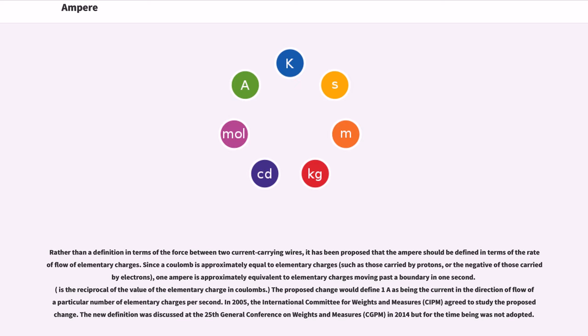Rather than a definition in terms of the force between two current carrying wires, it has been proposed that the ampere should be defined in terms of the rate of flow of elementary charges. Since a coulomb is approximately equal to 6.241509×10^18 elementary charges, such as those carried by protons, or the negative of those carried by electrons, one ampere is approximately equivalent to 6.241509×10^18 elementary charges moving past a boundary in one second.